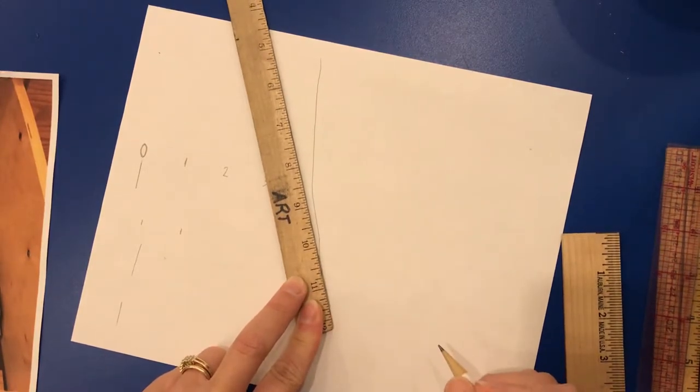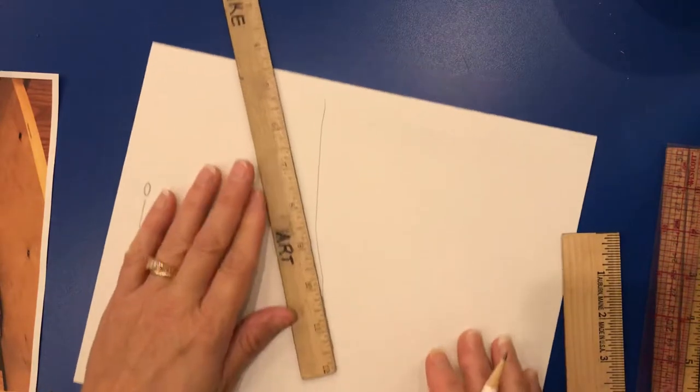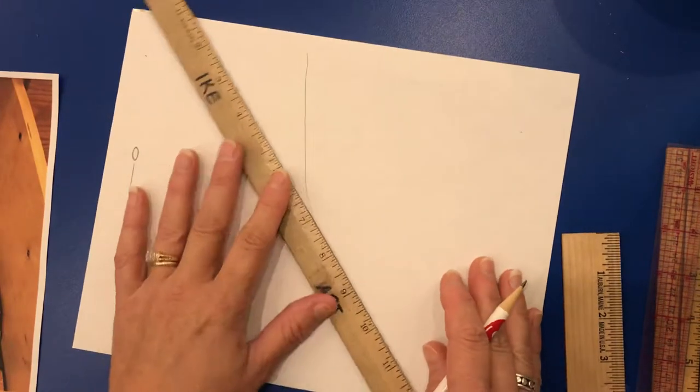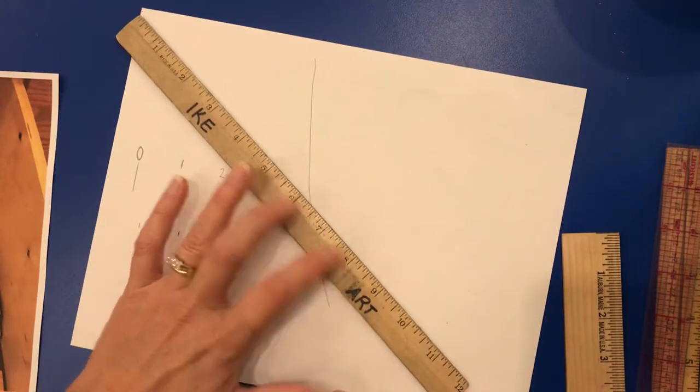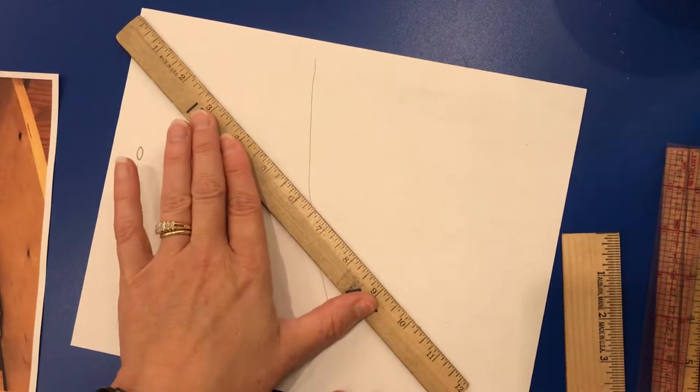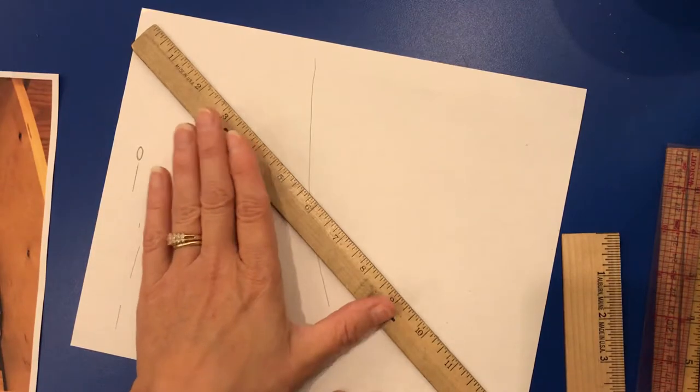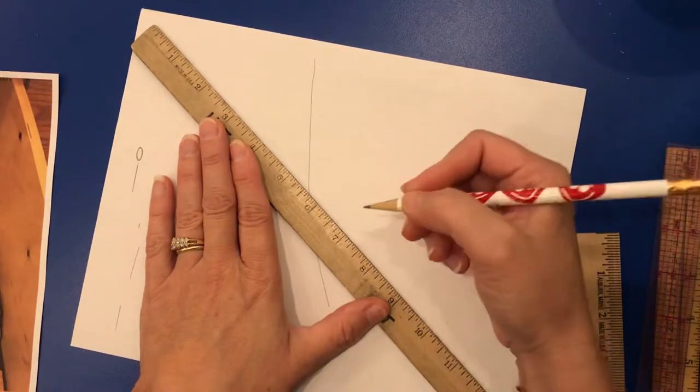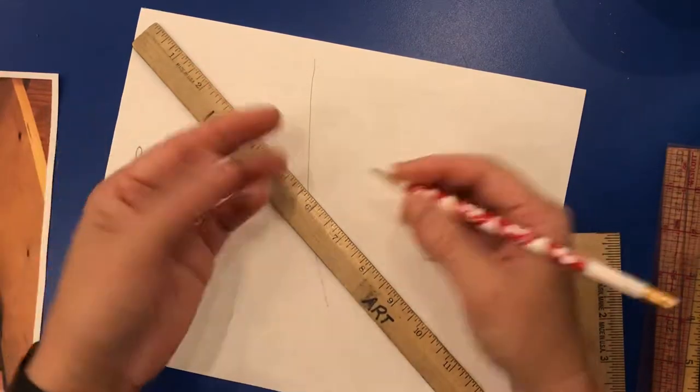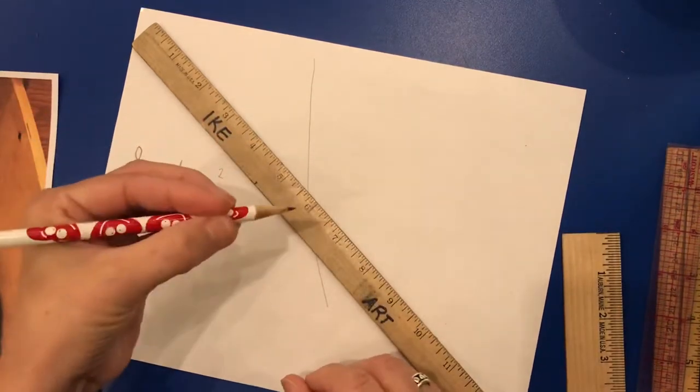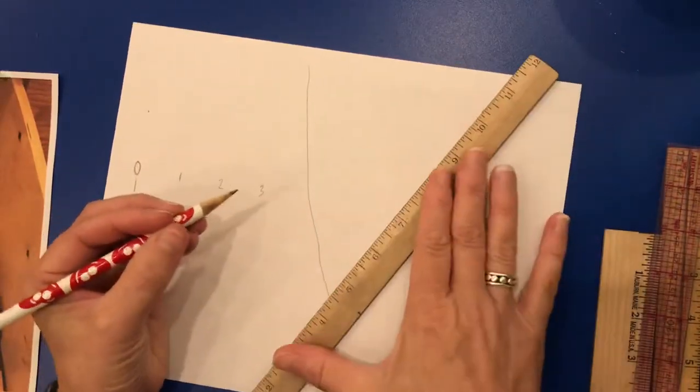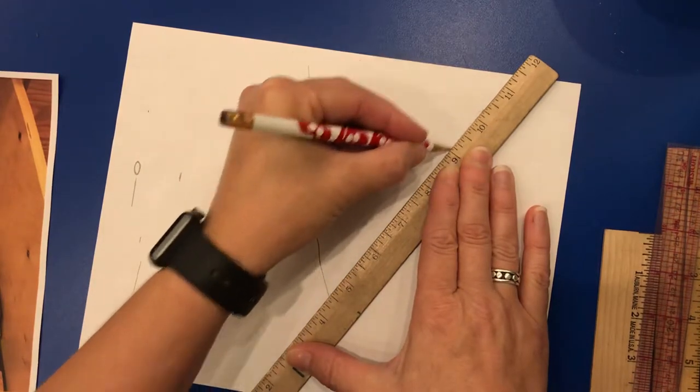So if you don't want your ruler to shift, and you want to make sure you have a nice straight line, then you have to make sure that you're holding your ruler in the middle. So I'm going to take my fingers, and I'm going to actually spread my hands out. And the hand that is holding the ruler is not my writing hand. So if you're left handed, and you normally write with your left hand, then you would be holding your ruler this way.